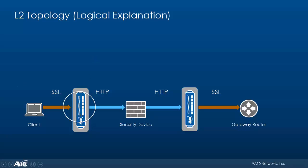Logically the network works like this: we have a client machine connected to the A10 device. Traffic from the client flows to the A10 in SSL format, received on port 443. The traffic is decrypted and sent out in HTTP format towards the security device. The security device, once it's done, sends the traffic back to the A10 device in HTTP format. The A10 device re-encrypts it and sends it out toward the gateway router in SSL format.